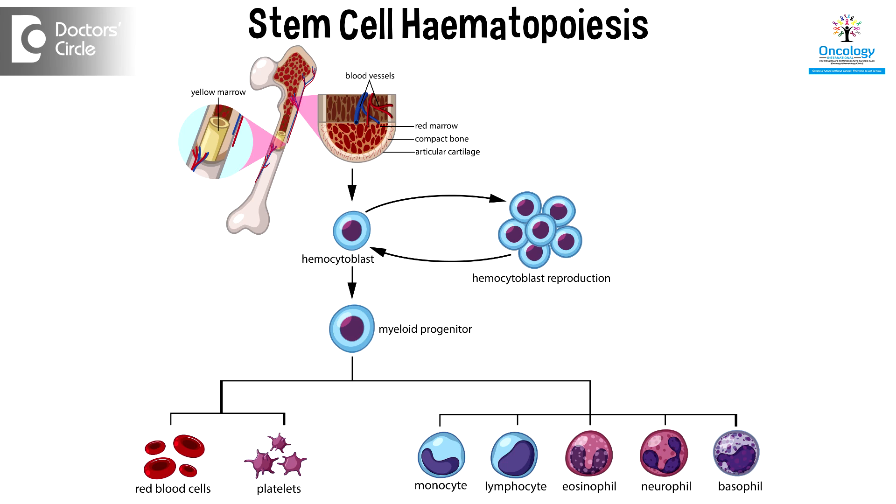All three components of the blood are produced from our bone marrow. Bone marrow is the factory of the blood components. What happens is in the bone marrow, we have certain mother cells or stem cells, who are omnipotent — that means they can either form RBCs, WBCs, or platelets. They all depend on certain factors inside the bone marrow which make them mature into either of these three components.